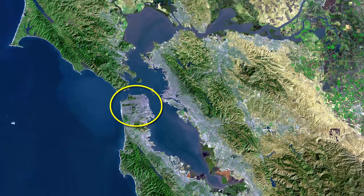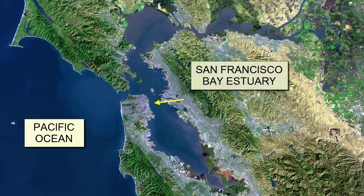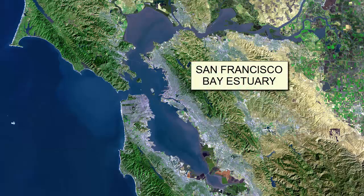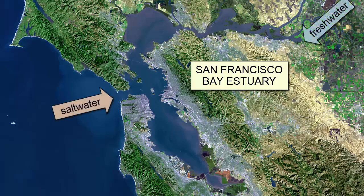The city of San Francisco is surrounded on three sides by coastline. The west coast opens to the Pacific Ocean, and the north and east coasts open to the San Francisco Bay estuary. Let's move inside San Francisco Bay and observe some of the processes at work in this embayment where saltwater and freshwater mix.